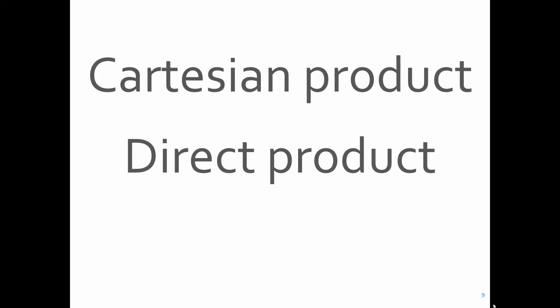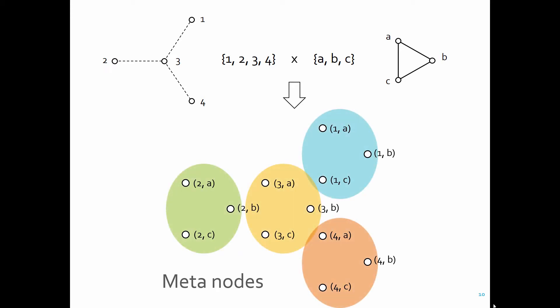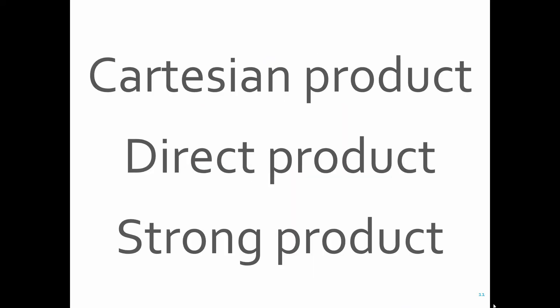In this work, I will begin with three major definitions of graph product. They are called Cartesian product, direct product, and strong product. In all of those, you first create a Cartesian product of the two node sets of the factor networks. Let's call this a set of meta nodes here. These meta nodes can be organized into multiple groups, or layers, which is why we call them graph product multi-layer networks. These three products differ in terms of how you are connecting those meta nodes. Let me explain one by one.